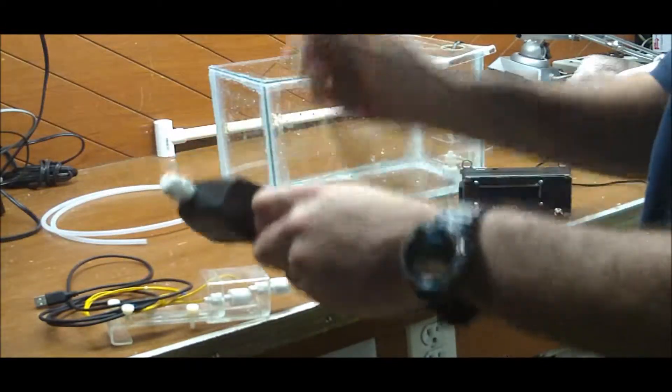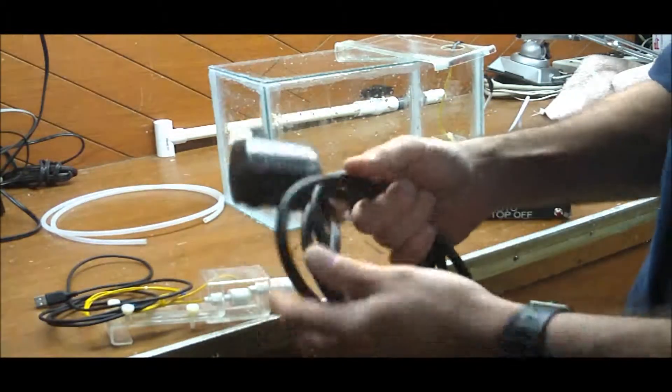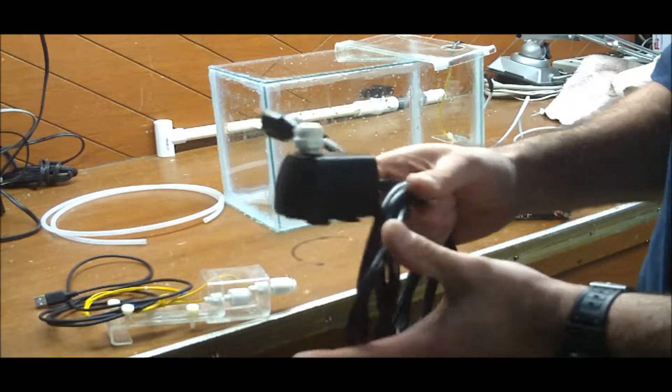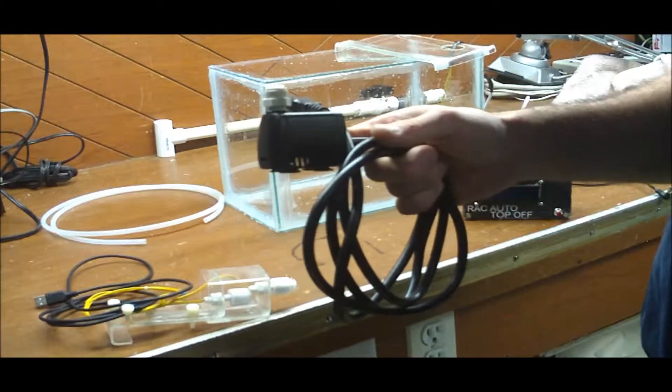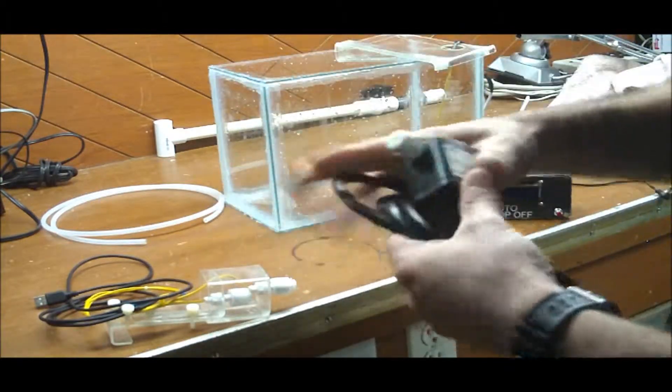It seems the most expensive part for these auto top offs is the computer and then the pump. The pumps, even the Aqua Lifter pump is $16 or $17. And so if you're watching this video, you're probably like, how can I save some money? So that's one way.